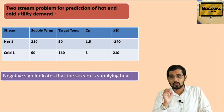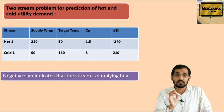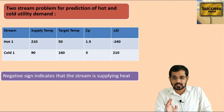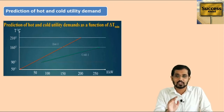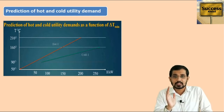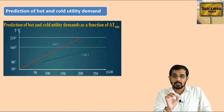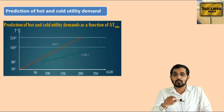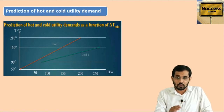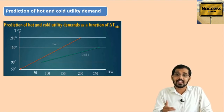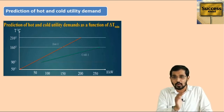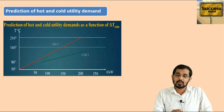For the hot stream, the supply temperature is 210°C and the target temperature is 50°C. For the cold stream, supply temperature is 90°C and target temperature is 160°C. The red line comes downward from 210 to 50°C because we are reducing the temperature of the hot stream. The green line goes upward from 90 to 160°C because we are adding heat to the cold stream. This is the meaning of the TH diagram.